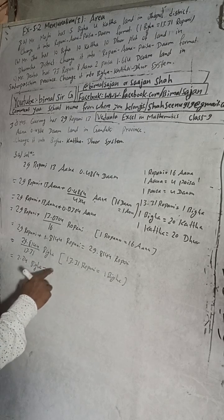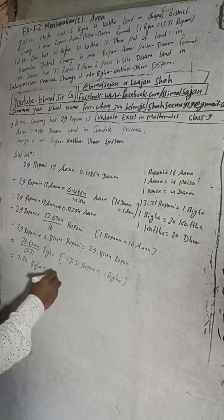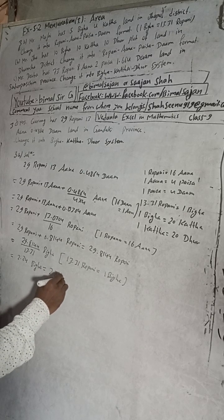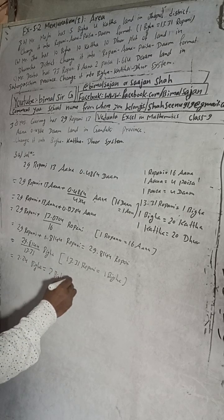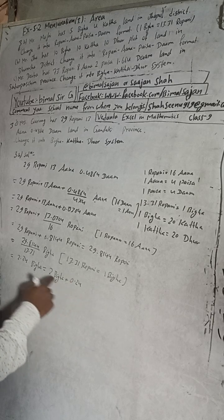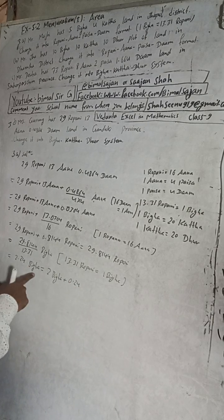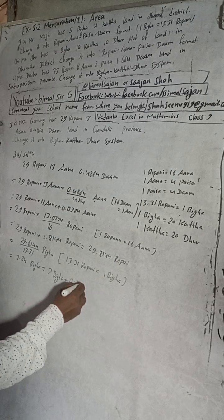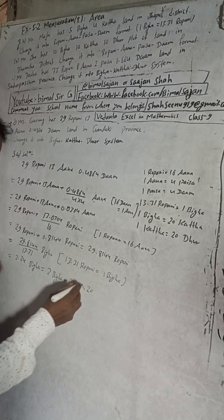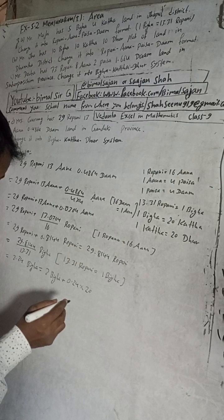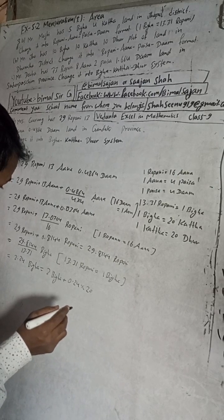Now this 2.24 bigaya can be written as 2 bigaya plus 0.24 bigaya. This is 0.24 bigaya, but we can multiply this into 20. When you multiply bigaya into 20, it will be Katha. So this is now a Katha.